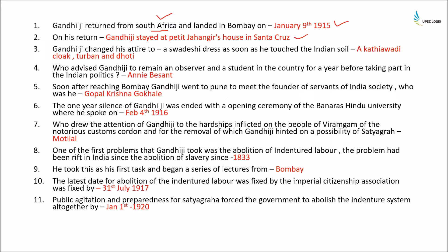Gandhiji changed his attire to a Swadeshi dress — a Kathiawadi cloak, turban, and dhoti — as soon as he touched Indian soil. He was advised by Annie Besant to remain an observer and student for a year before entering Indian politics. Soon after reaching Bombay, he went to Pune to meet Gopal Krishna Gokhale, the founder of the Servants of India Society.